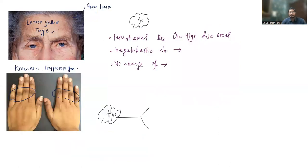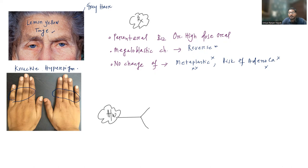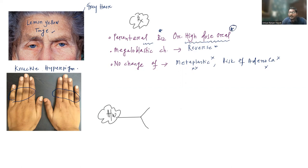When you treat these patients with vitamin B12, the megaloblastic changes will reverse — including those in the gastric mucosa. However, the metaplastic changes will not reverse, and the risk of adenocarcinoma is not reversed, because these are due to atrophic gastritis caused by autoimmune T cells, not vitamin B12 deficiency itself. Because there is defective absorption, we can give parenteral B12. However, high-dose oral B12 therapy can also be given because the passive absorption mechanism will still be normal.